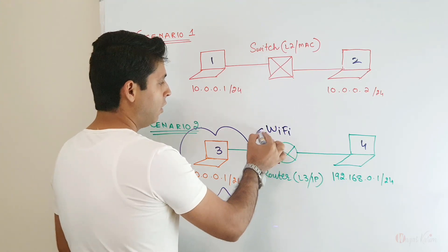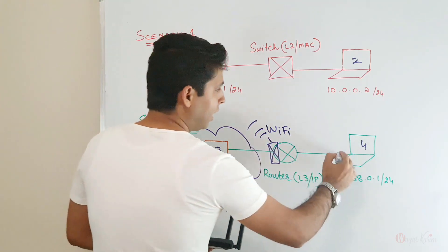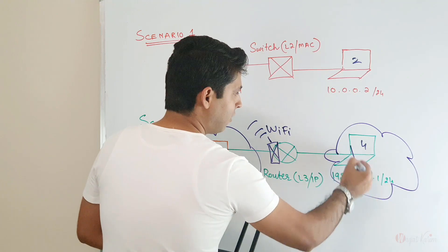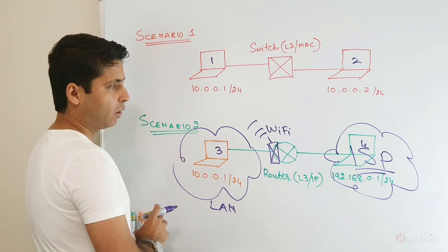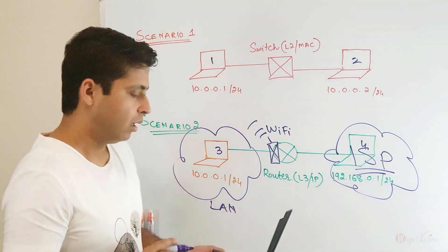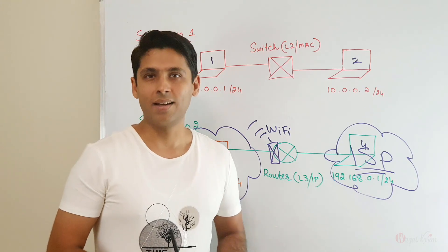So it sits in between our ISP network, our internet service provider, and this side is our local area connection. So this is a home Wi-Fi router. If you still have any questions, you guys can ask.